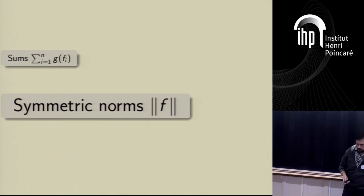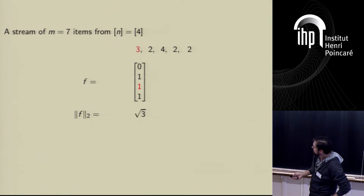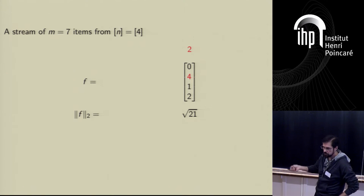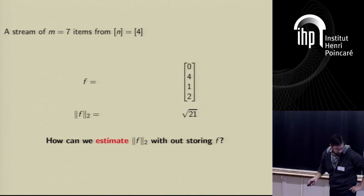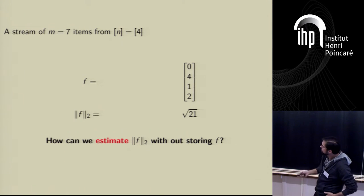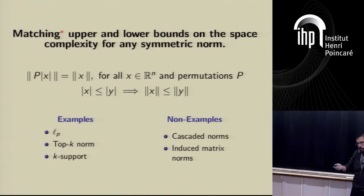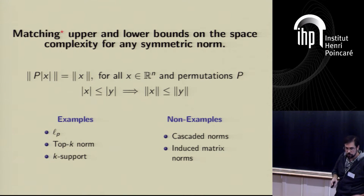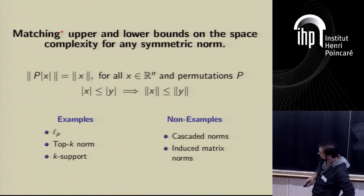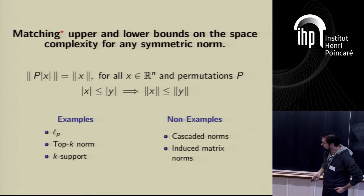Now I'll talk about symmetric norms. The model is the same — we have the stream, we find the vector at the end, and I'm interested in approximating some norm. The question is how can we estimate this norm in small space without storing the vector? I'm going to show matching upper and lower bounds for the space complexity of approximating any symmetric norm. A symmetric norm is invariant under coordinate permutations and sign changes. LP norms are examples. Cascaded norms, induced matrix norms, and Schatten norms except Schatten 2 are not examples.